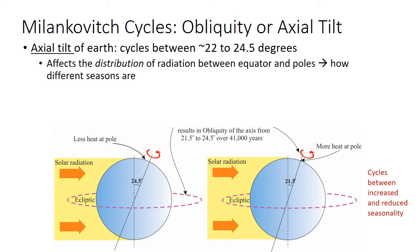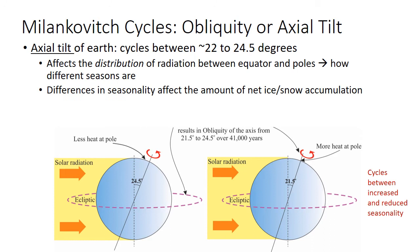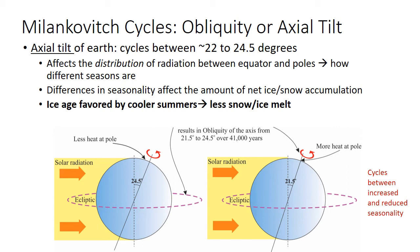Why does that difference in seasonality impact whether we're in an ice age or not? This results from the fact that seasonality impacts the amount of net ice and snow accumulation. If there's greater seasonality — warmer summers and colder winters — this tends to lead to less snow and ice accumulation. Whereas if there is less seasonality, that's going to favor the accumulation of ice and snow. Mostly this is because when there's less seasonality, summers are cooler and so less snow and ice will melt.